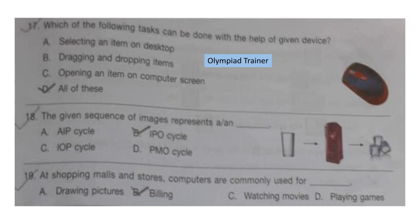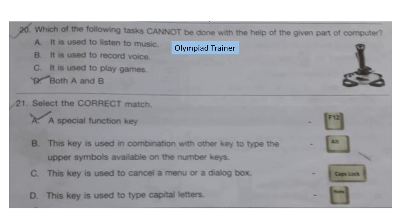Question 19: At shopping malls and stores, computers are commonly used for dash. The correct answer is option B — billing. Question 20: Which of the following tasks cannot be done with the help of the given part of a computer? A: It is used to listen to music. B: It is used to record voice. C: It is used to play games. D: Both A and B. The correct answer is option D — both A and B are not possible.